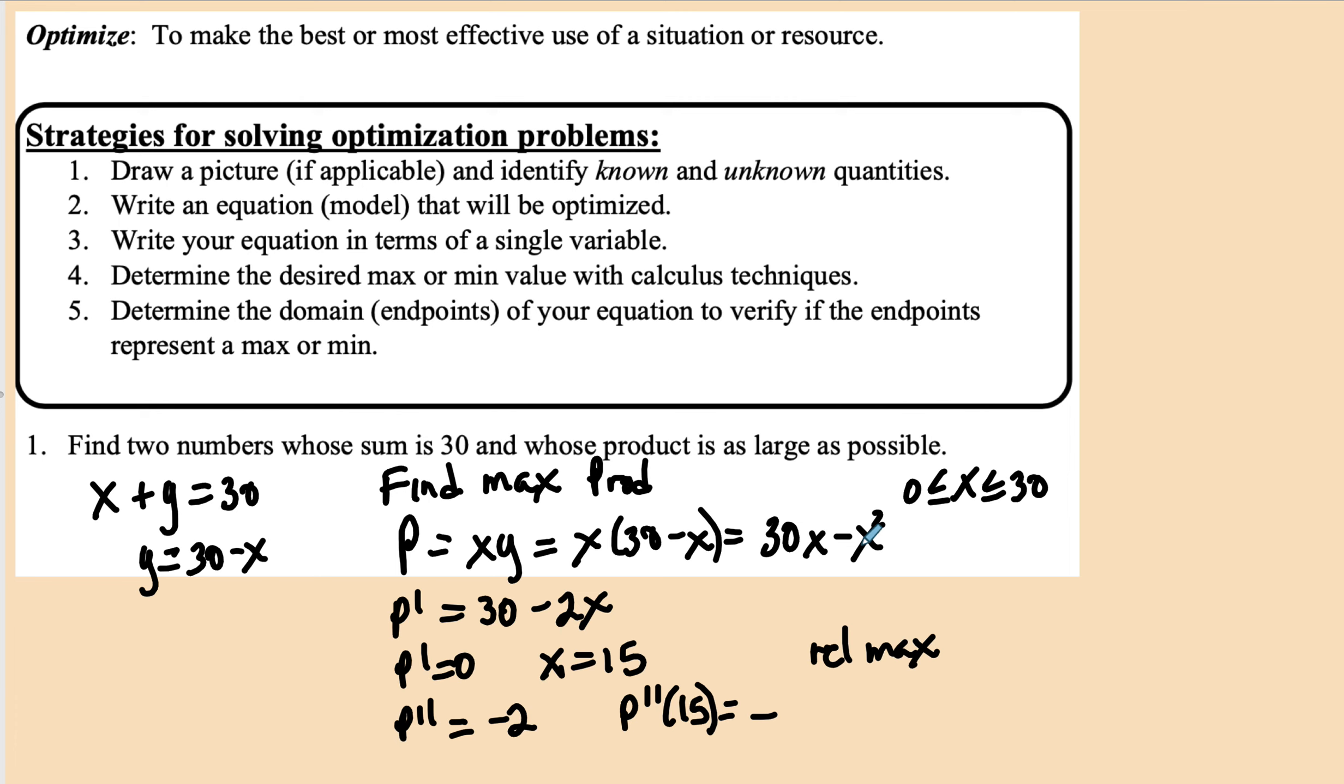So that'll be 15 times (30 - 15²). And that answer will be a relative max of 225 at x = 15, because P' = 0 and P'' < 0. This is called the second derivative test.